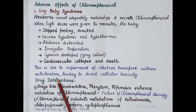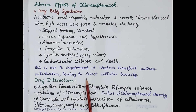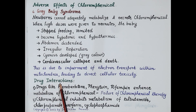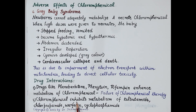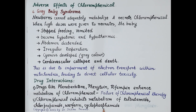This affects every cell of the body including liver mitochondria and skeletal muscles, leading to the symptoms of gray baby syndrome. Regarding drug interactions: drugs like phenobarbitone, phenytoin, and rifampin enhance the metabolism of chloramphenicol, reducing its plasma concentration and potentially causing therapy failure. Conversely, chloramphenicol inhibits the metabolism of drugs like tolbutamide, chlorpropamide, warfarin, and cyclophosphamide, causing their accumulation and toxicity, making dosage adjustment necessary.